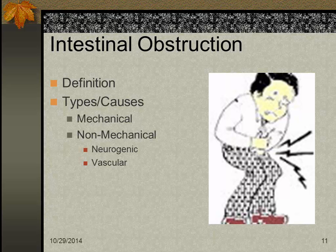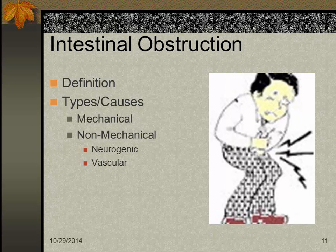Intestinal obstruction, also called small bowel obstruction or SBO or ileus, is any condition preventing fecal contents from passing through the intestine. It can be mechanical or non-mechanical. Mechanical obstruction results when the lumen of the intestine is blocked — the most common cause is tumor, but fecal impaction, hernia, twisted or kinked bowel, intestinal adhesions from scar tissue of previous surgeries, and foreign bodies can also cause obstruction.